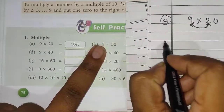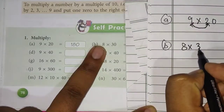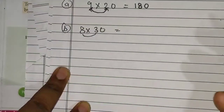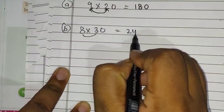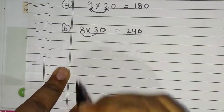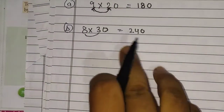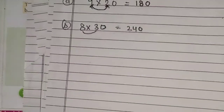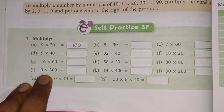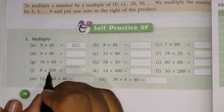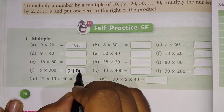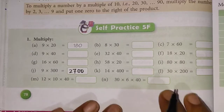Part B of the first question is 8 × 30. 8 × 3 = 24, and we have one zero, so we place one zero after the product — giving us 240. Similarly, suppose there are two zeros: 9 × 3 = 27, and we place two zeros, giving 2700.